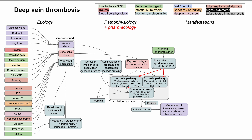Thrombin appears in both the intrinsic and common pathways, and the heparin family of drugs blocks thrombin's effects in different ways. Heparin is the largest molecule; low molecular weight heparin, also called enoxaparin, is smaller; fondaparinux is even smaller. Dabigatran is a newer oral direct thrombin inhibitor. All of these drugs block thrombin directly.